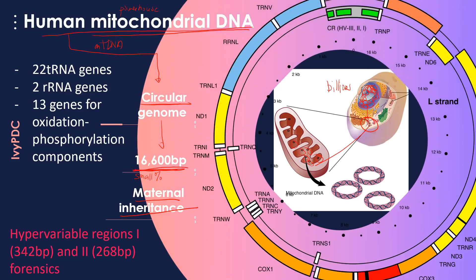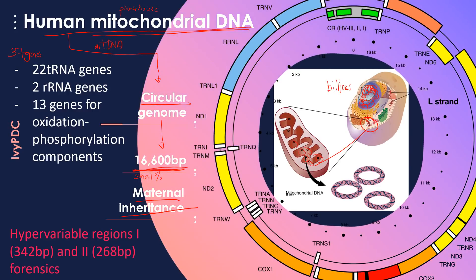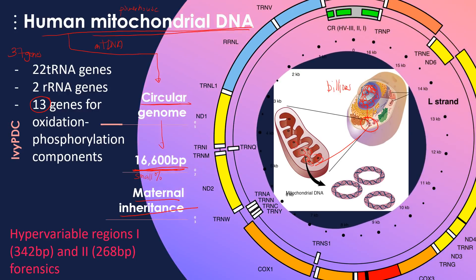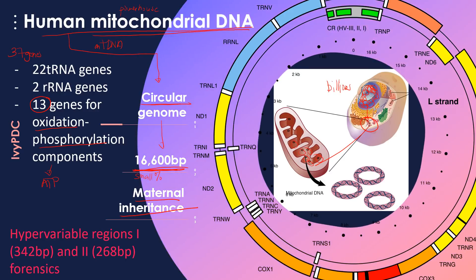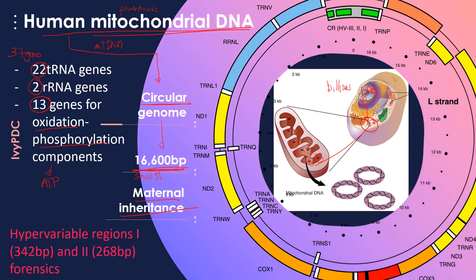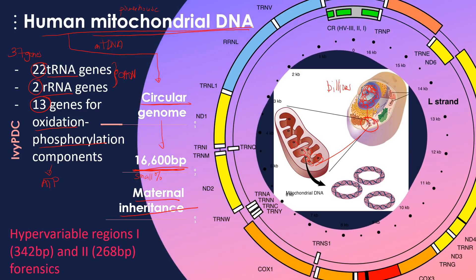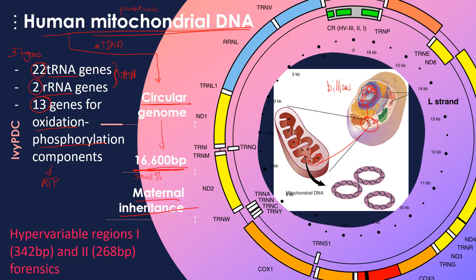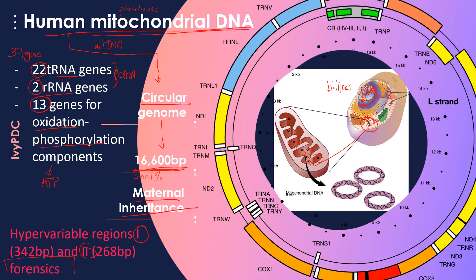There are a total of 37 genes found in mitochondrial DNA, and all of these are used for mitochondrial function. 13 of these genes provide information for the creation of enzymes used in the oxidative phosphorylation process, which creates ATP. The remainder are used to make molecules like transfer RNA and ribosomal RNA, used for protein synthesis. For diagnostic purposes, the hypervariable regions 1 and 2 are routinely sequenced for forensics.